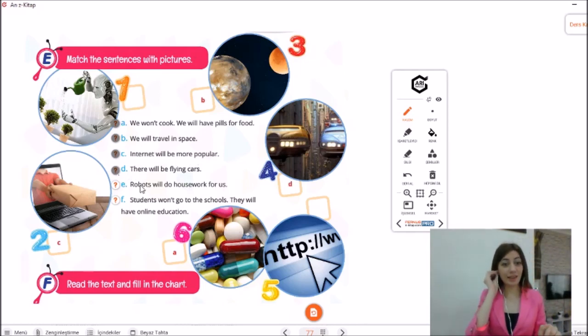And look at the other sentence: Robots will do housework for us. Which one could it be? Robots. Well done, it's picture one. Great job! And look at the sentence F: Students won't go to the school, they will have online education. Which picture could it be? Great job, it's picture five. Thank you. That's all for now. See you next lesson. Bye bye.